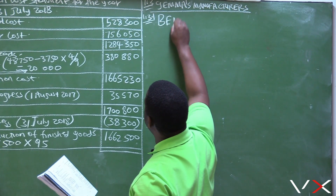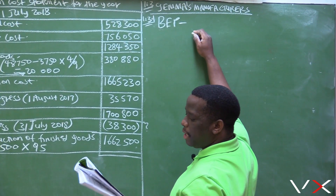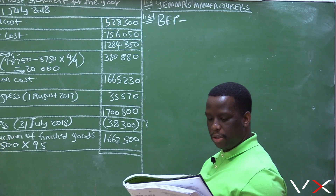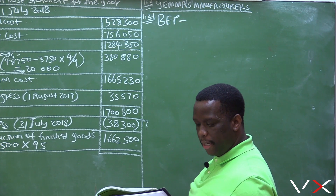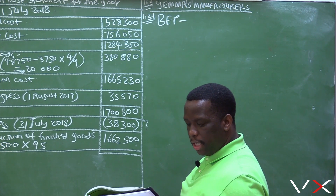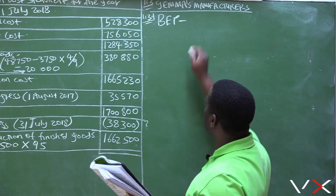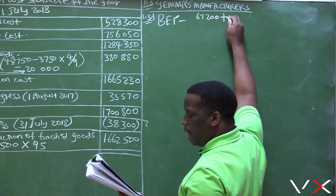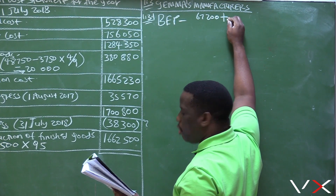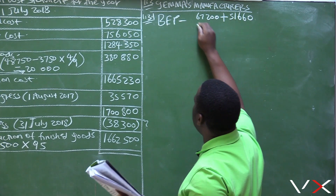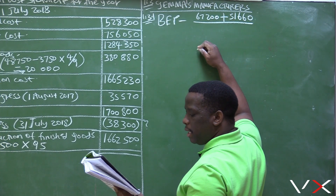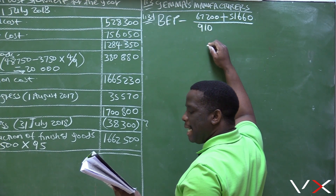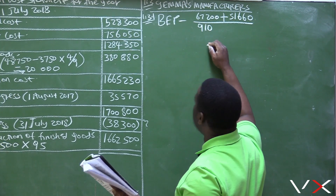We are calculating the break-even point. The formula is total fixed cost divided by selling price per unit minus variable cost per unit. The total fixed cost is made up of factory overheads of $67,200 plus administration cost of $51,660. The selling price per unit is $910.